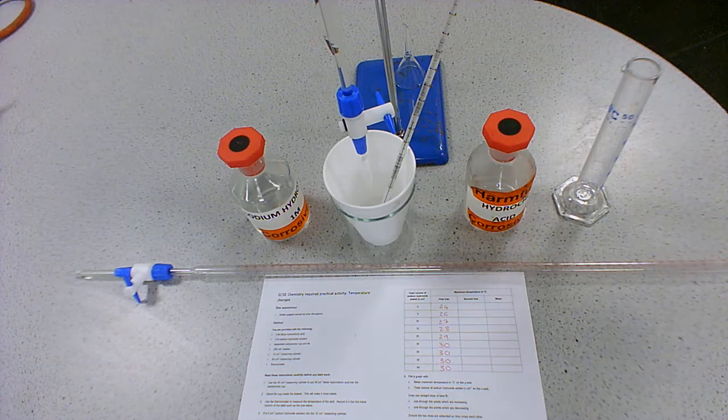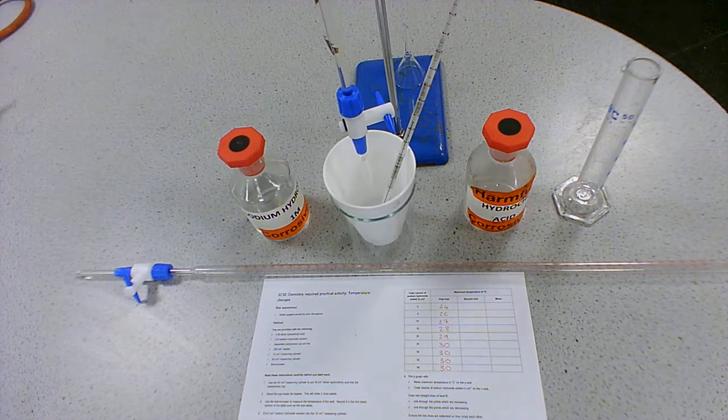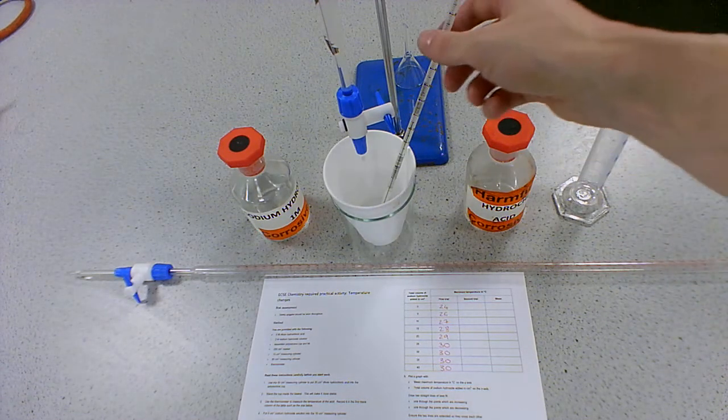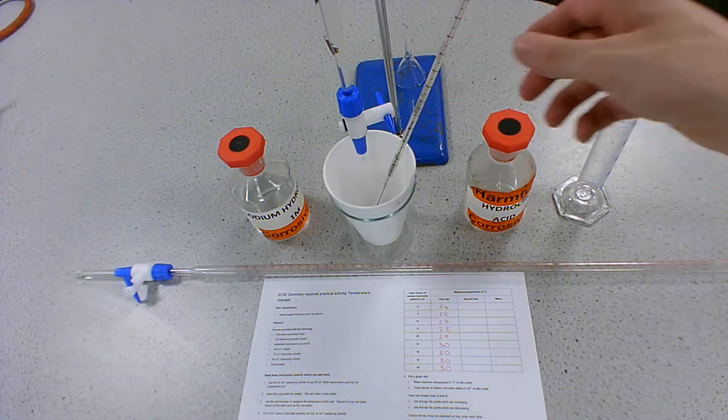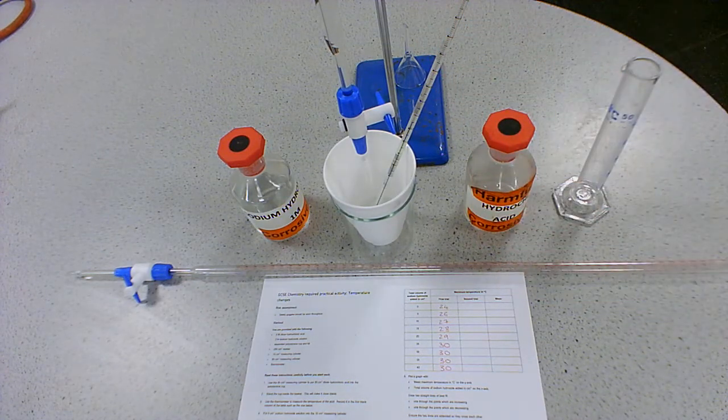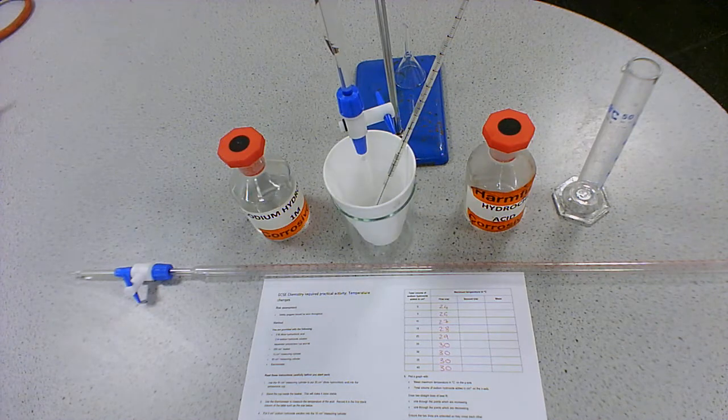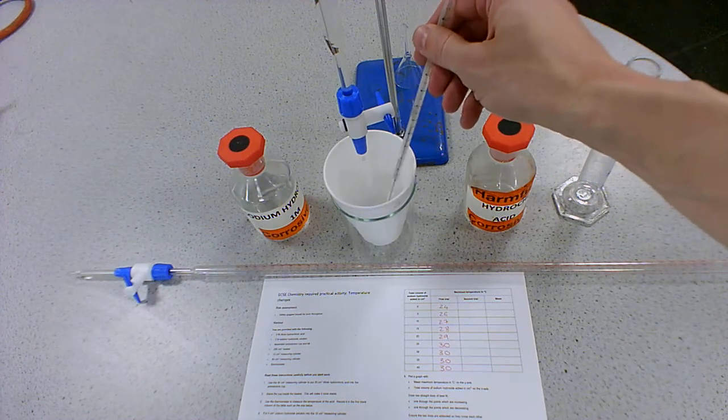And the opposite, if it was an endothermic reaction, again, we wouldn't want too much heat energy from the surroundings increasing the temperature. So by using a polystyrene cup, we are insulating the reaction so we can get a more accurate reading for the temperature change.